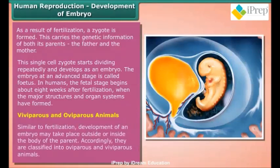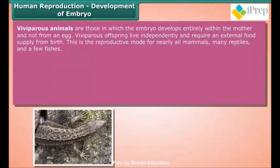Similar to fertilization, development of an embryo may take place outside or inside the body of the parent. Accordingly, animals are classified into oviparous and viviparous. Viviparous animals are those in which the embryo develops entirely within the mother and not from an egg. Viviparous offspring live independently and require an external food supply from birth; this is the reproductive mode for nearly all mammals, many reptiles, and a few fishes.